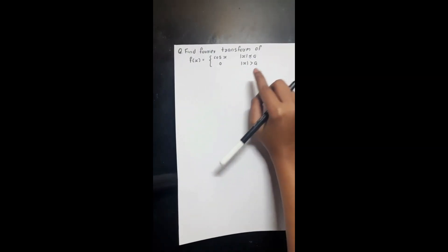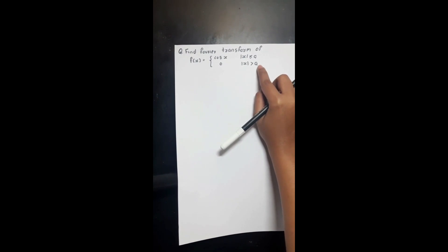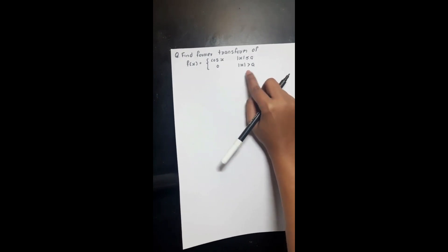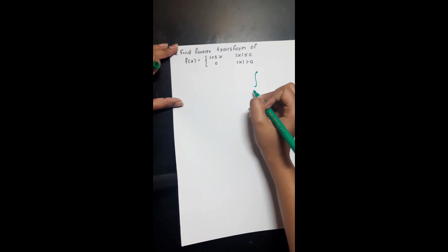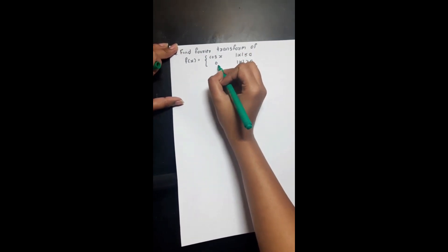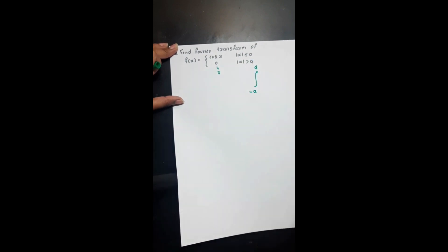Now moving to the next question: find the Fourier transform of f(x) = cos(ax) when |x| < a, and zero when |x| > a. Similar to the last question, we only need to integrate from minus a to plus a, since the function is zero elsewhere.